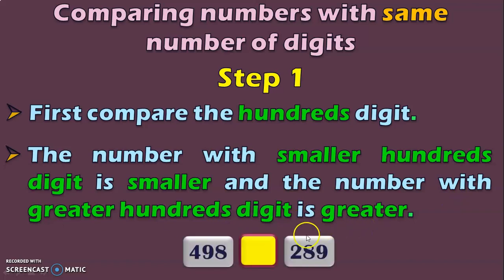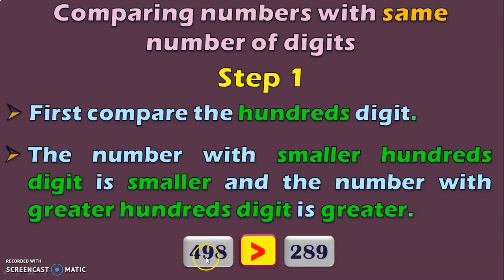Let us see this with an example. We have 498 and 289. We know that 4 is greater than 2, which is in the hundreds place. With that, you can conclude 498 is greater than 289.